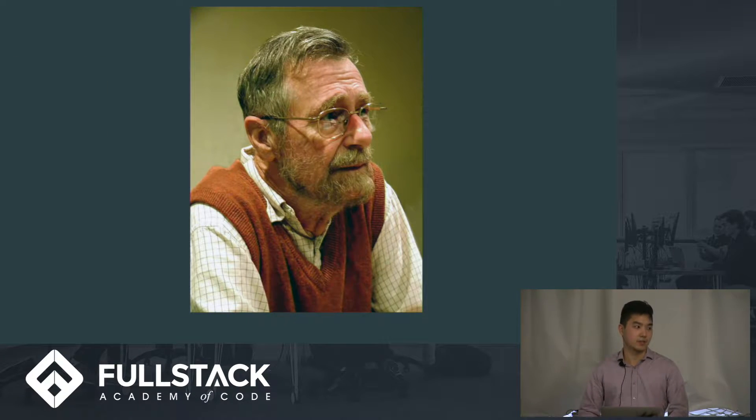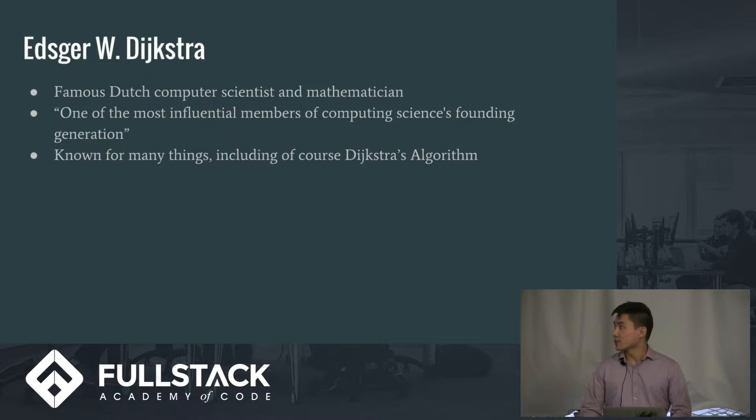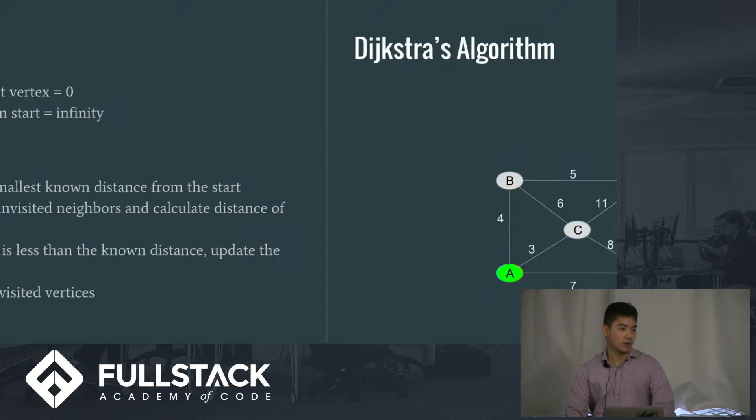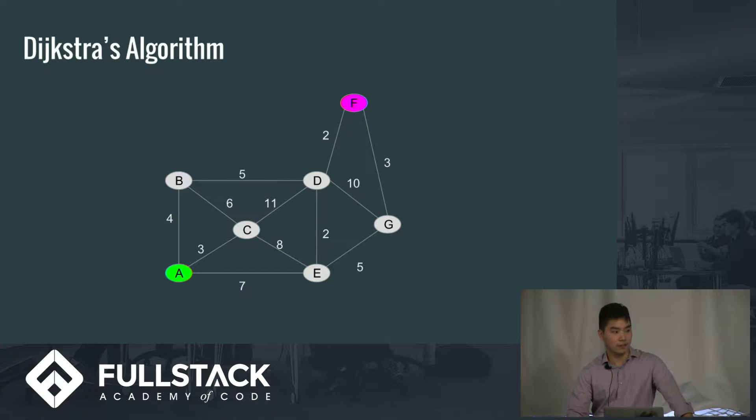That's where this handsome gentleman comes in. His name is Edgar W. Dijkstra, and he's one of the most famous Dutch computer scientists and mathematicians. And one of the many things he's known for is Dijkstra's algorithm. This is Dijkstra's algorithm. It's a little bit lengthy to read, so I'm not going to read it to you. So here's an example instead.